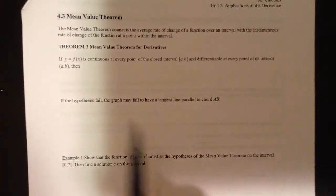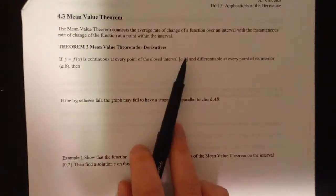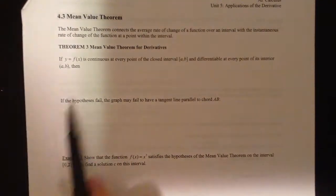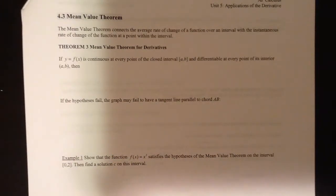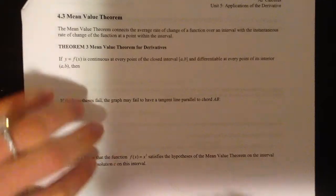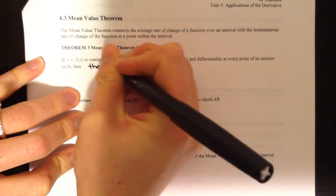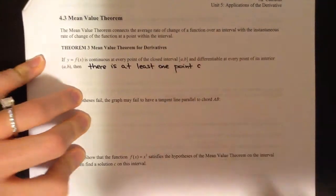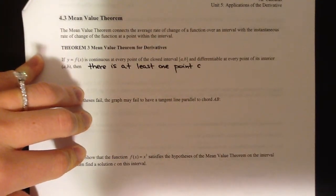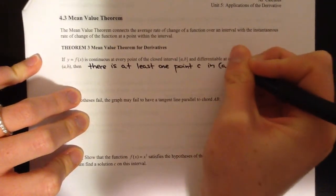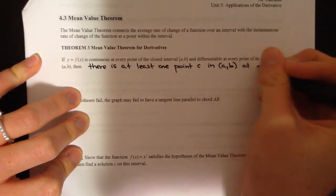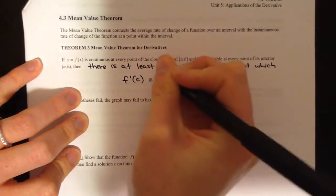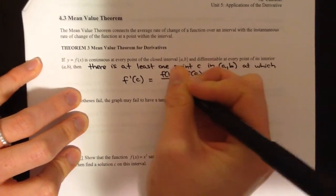The actual theorem in math terms: if f(x) is continuous on the closed interval and differentiable on the interior — the open interval — then there is at least one point C, where C is an x-value in the open interval from A to B, at which f′(C) equals f(B) minus f(A) over B minus A.